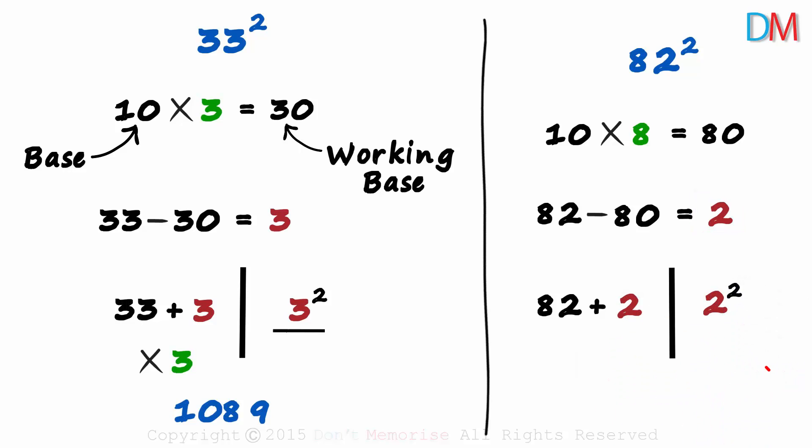The number of digits on the right will be equal to the number of zeros in the base. 1 zero, 1 digit. And don't forget the most important step here.